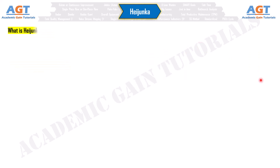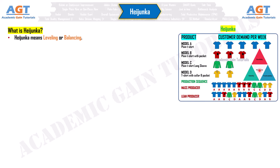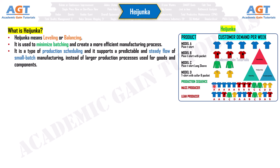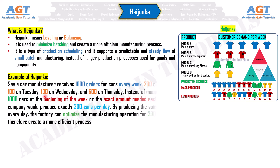Number 10: Heijunka. Heijunka means leveling or balancing. It is used to minimize batching and create a more efficient manufacturing process. It is a type of production scheduling that supports a predictable and steady flow of small-batch manufacturing instead of larger production processes. For example, a car manufacturer receiving 1,000 orders per week — 200 on Monday, 100 on Tuesday, 100 on Wednesday, and 600 on Thursday — would instead produce exactly 200 cars per day, optimizing the manufacturing operation for a consistent output.